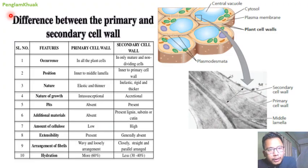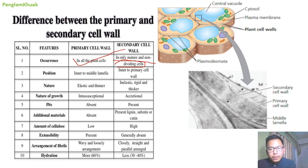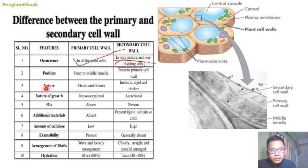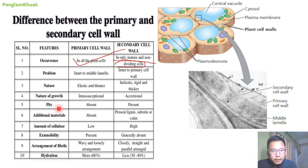Let's see some differences between primary and secondary cell wall. Primary cell wall is present in all plant cells, while secondary cell wall is only in mature and non-dividing cells — such as in the bark of trees or seeds. In terms of position, primary cell wall is inner to the middle lamella, and secondary cell wall is inner to the primary. In terms of nature, primary cell wall is elastic and thinner, while secondary cell wall is inelastic, hard, and thicker.